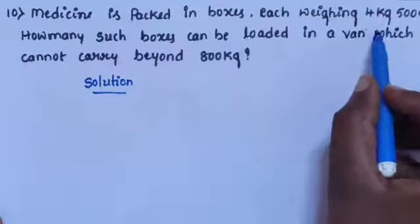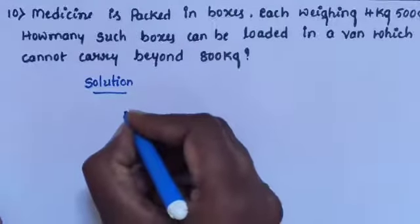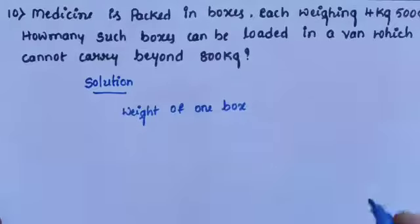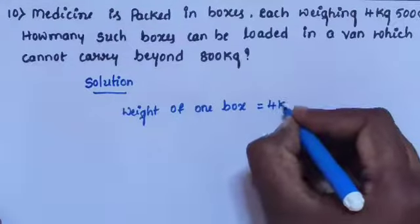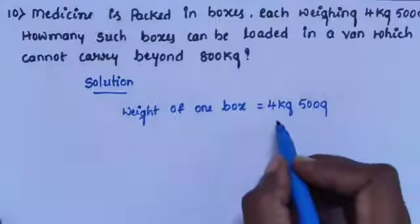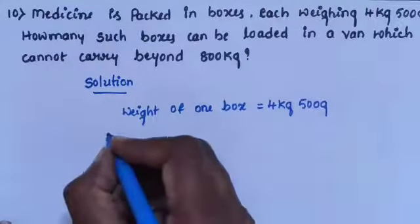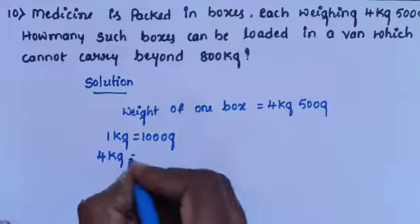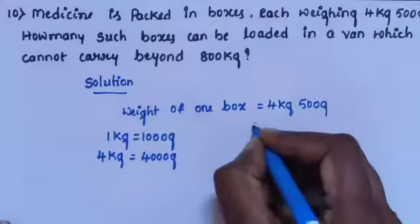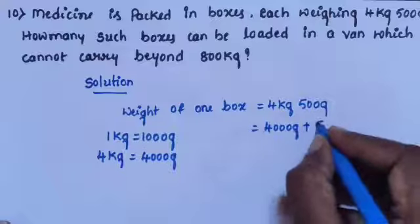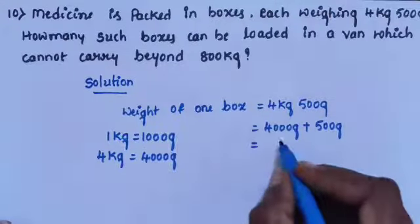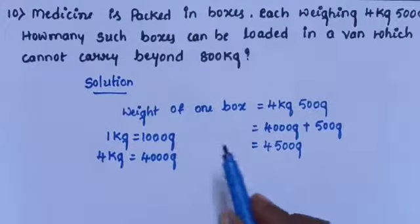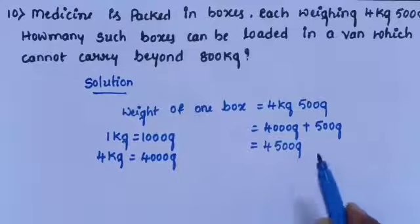Medicine is packed in boxes, each weighing 4 kg 500 g. The weight of 1 box carrying the medication is equal to 4 kilogram 500 gram. Converting 4 kilogram into grams: 1 kilogram is equal to 1000 gram, so 4 kilogram is equal to 4000 gram. Therefore, 4000 gram plus 500 gram is equal to 4500 gram. The weight of 1 box is 4500 gram.